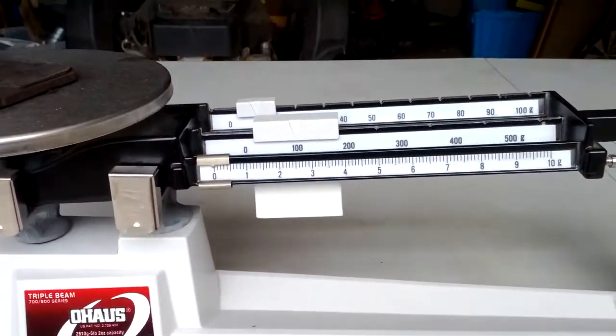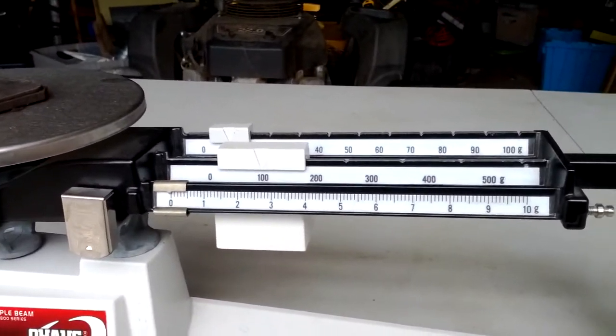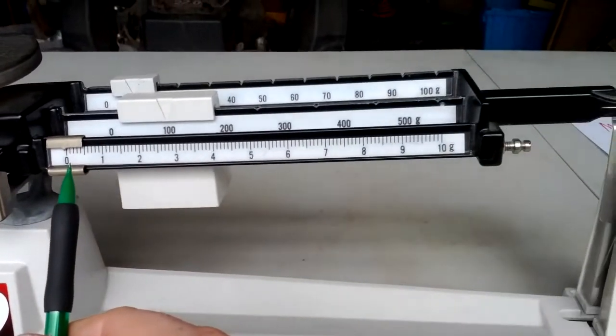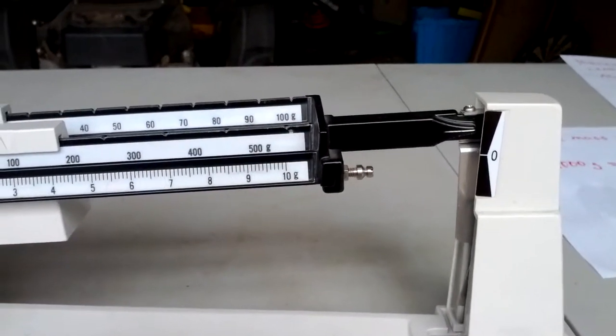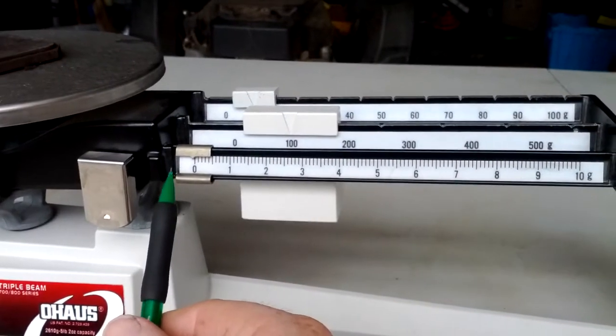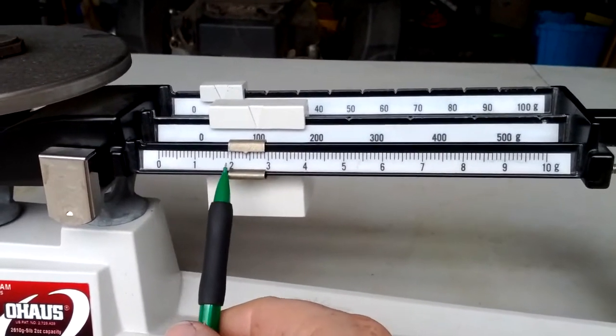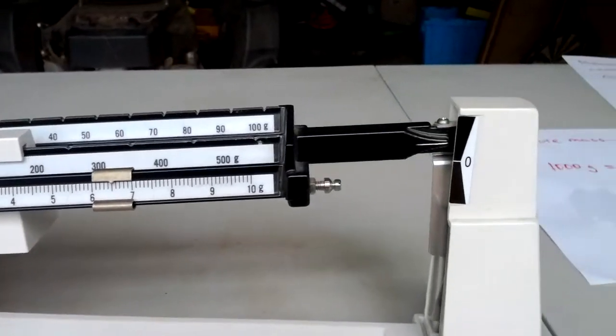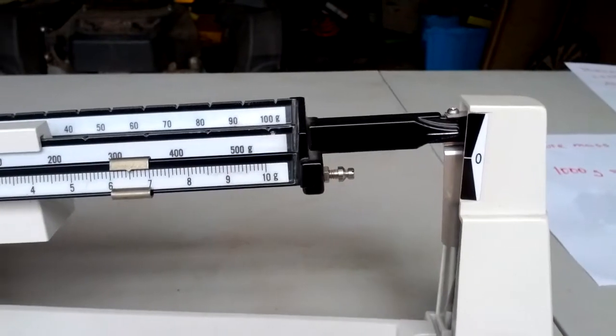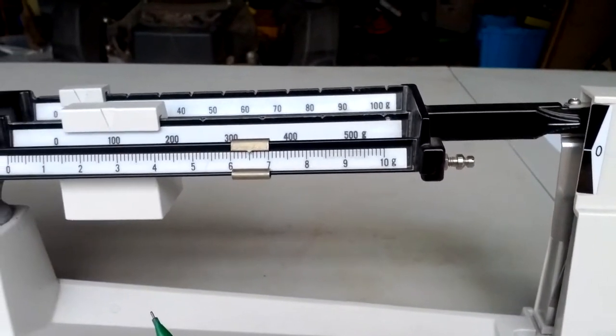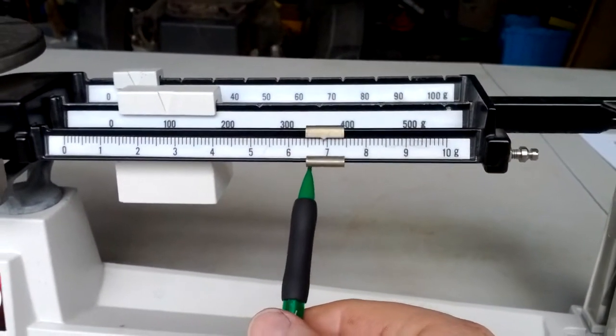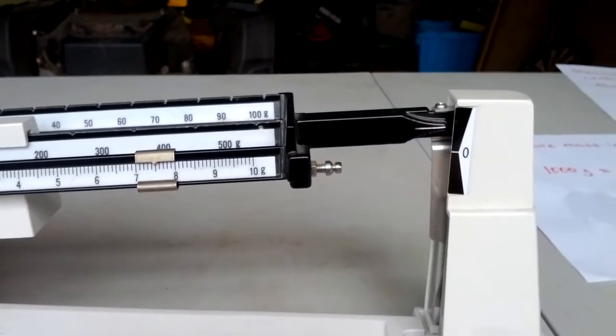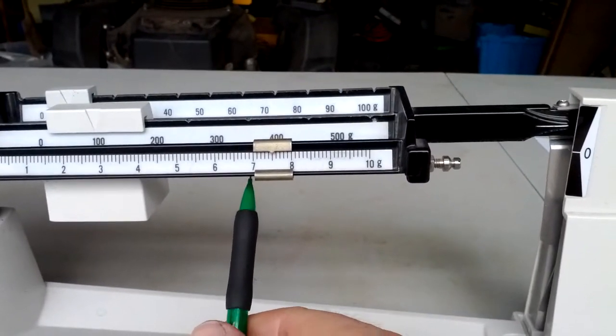What you do next is you use the small rider. And you're going to move it over a little bit at a time until you get right to the zero on the balance. The best way to do this is with a pencil. So you're going to slide it over a little bit at a time. And each time you slide it, you have to look over here and see if you're getting close to zero. We're already over to like 6.5 and it's not there. So I'm going to slide it a little bit more. I'm at 7.5 and it's still not at zero.